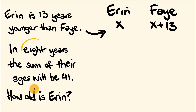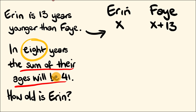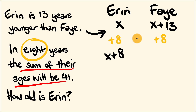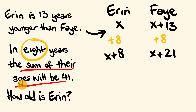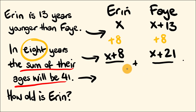Now the next sentence: in 8 years time, the sum of their ages will be 41. Two pieces of information again — let's add that 8 years: plus 8, plus 8. So Aaron in 8 years will be x plus 8, and Faye will become x plus 21 (since 13 plus 8 is 21). At that stage, the sum of their ages will be 41, meaning if we add both ages together we get 41.